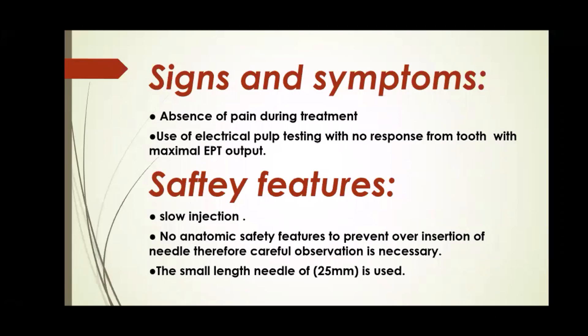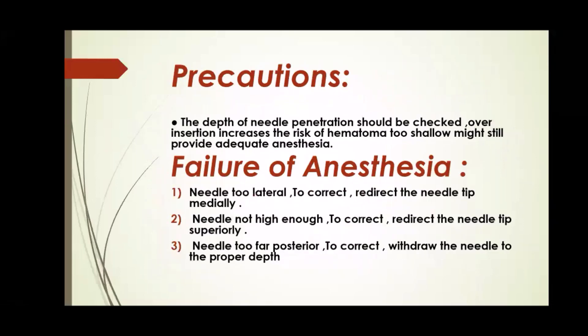Signs and symptoms include absence of pain during treatment and no response from the tooth with maximal output on electrical pulp testing. Safety features include slow injection; there are no anatomic safety features to prevent over-insertion of the needle, so careful observation is necessary. A short needle of 25 mm is used. The precaution is that depth of needle penetration should be checked, as over-insertion increases the risk of hematoma.